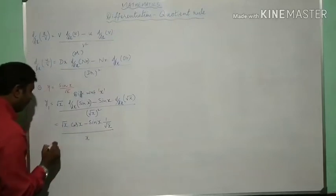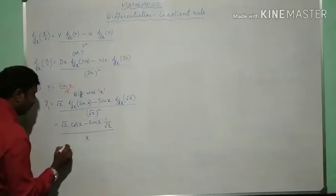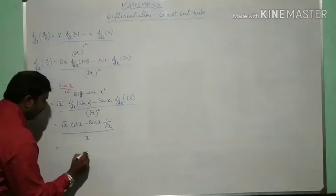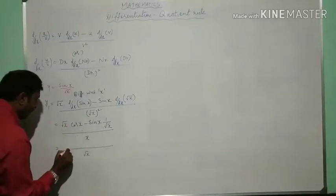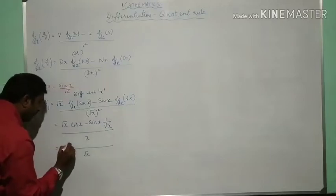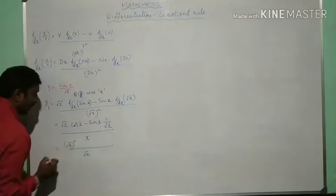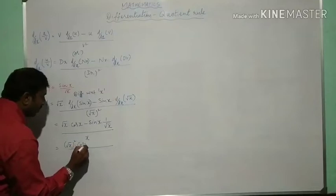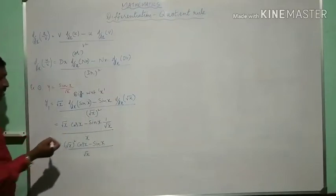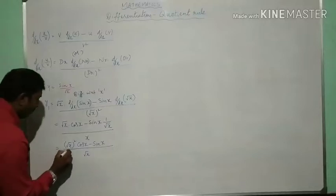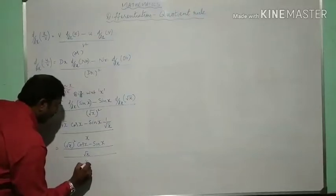Now take LCM. When you take root x as LCM in this, you will have root x into root x—root x whole square into cos x minus sin x into 1 is sin x whole, all divided by x.